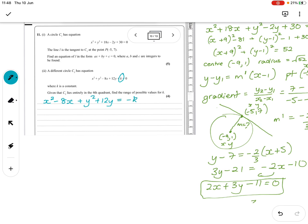I'll put minus k over there. So we've got x minus 4 squared minus 16 plus y plus 6 squared minus 36 equals minus k. So x minus 4 squared plus y plus 6 squared equals 16 plus 36. Oh, it's 52 again. So that's good. 52 minus k. So we've got a center of 4, minus 6.